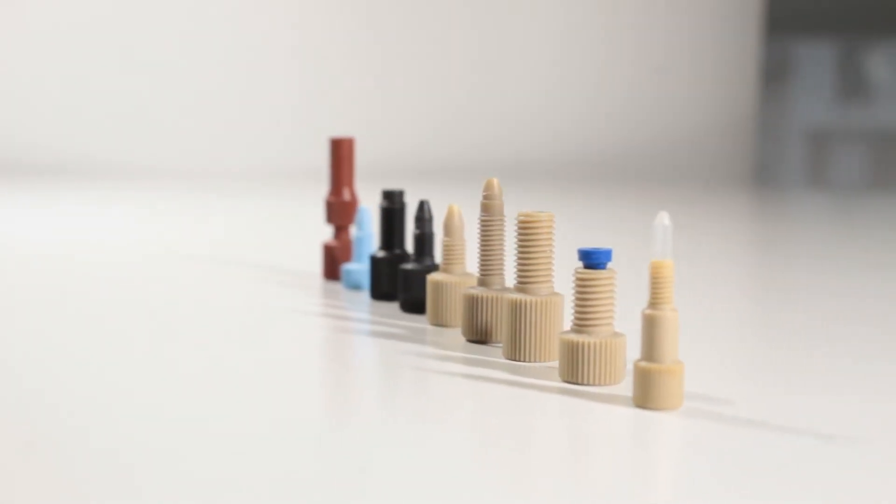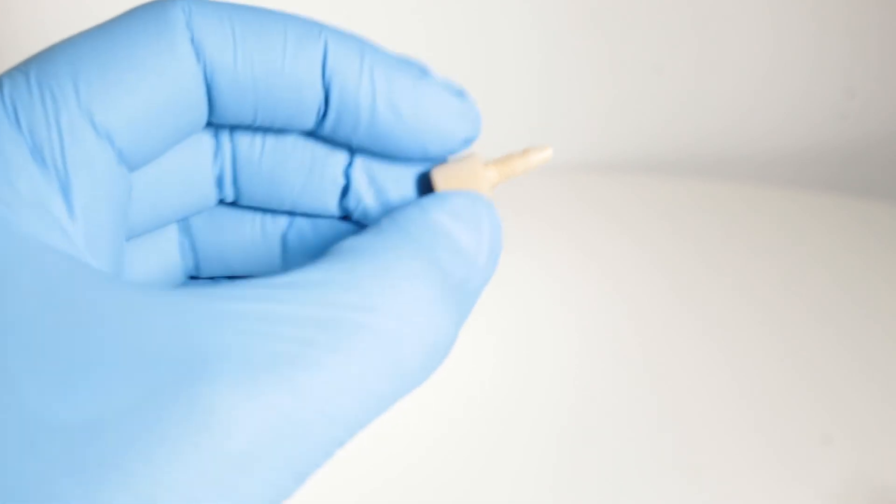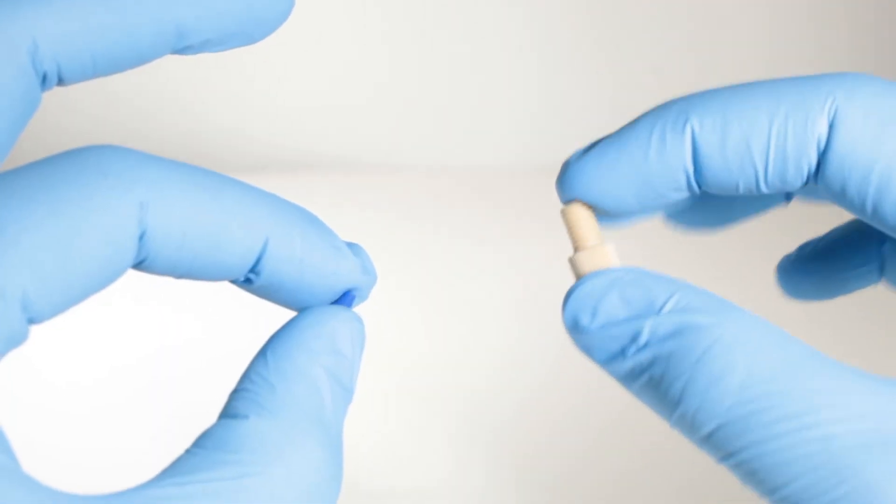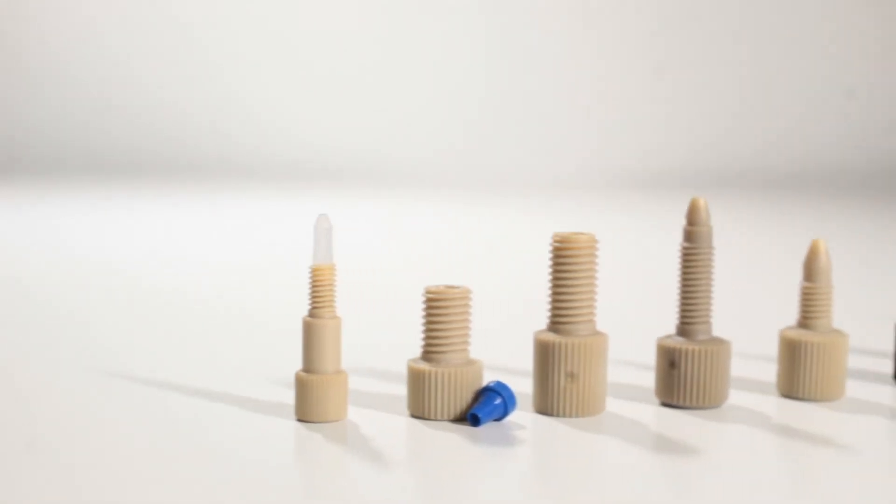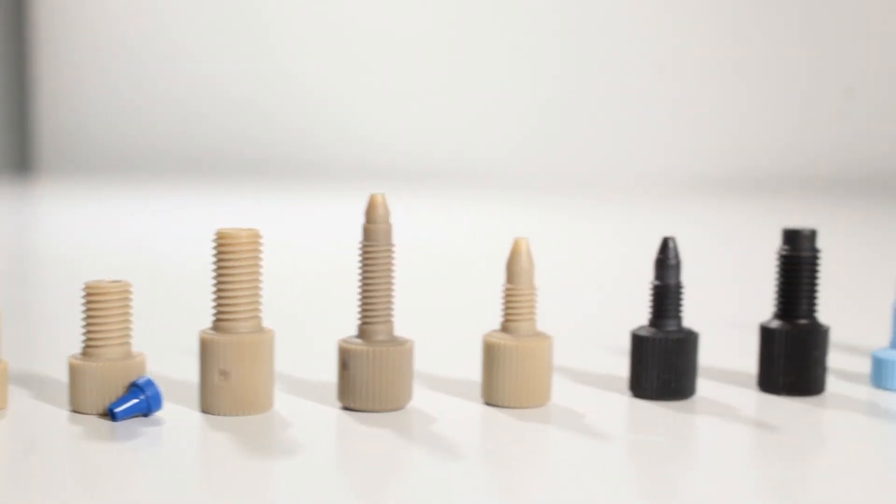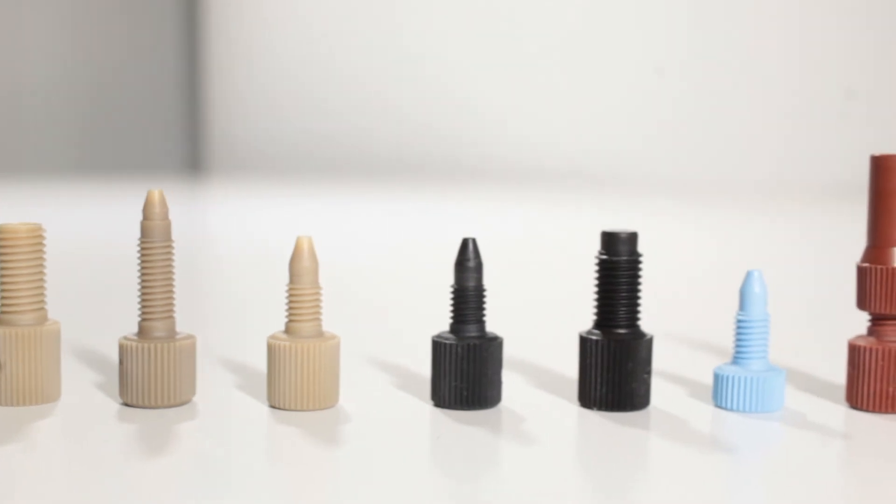By screwing the nut's thread, the ferrule will adapt to the output and provide that perfect match. It exists a wide variety of fittings. They can be either a single part or divided into two parts, the nut and the ferrule.